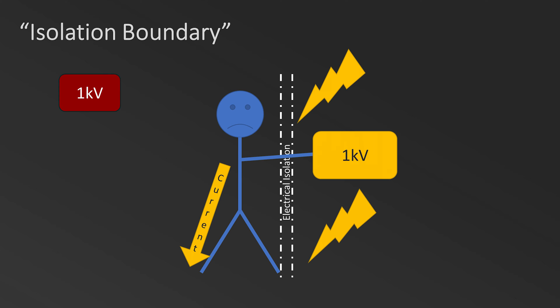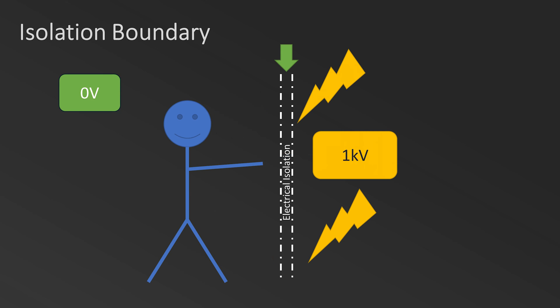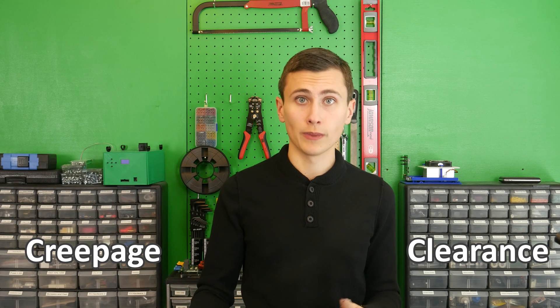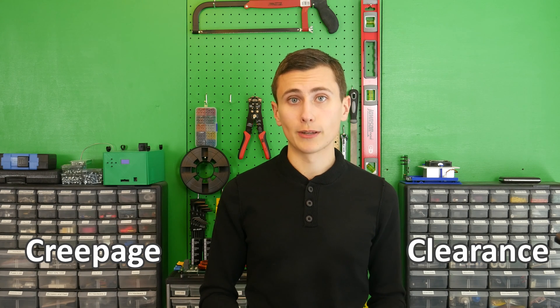The isolation boundary is a logical line that you've drawn between the high voltage and low voltage areas of your design. This ends up turning into a physical gap or separation in your PCB layout while implementing isolation distances. Let's transition into two methods of establishing or evaluating physical isolation: creepage and clearance distances.